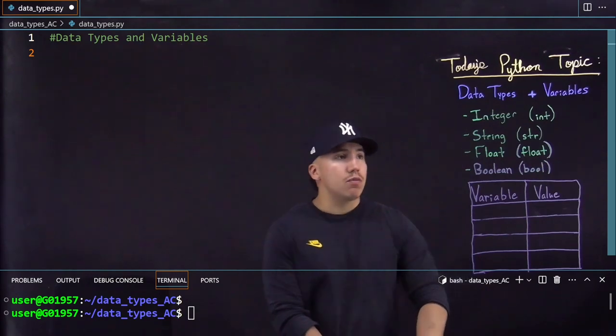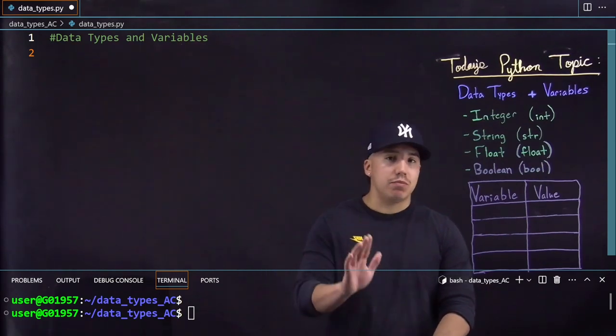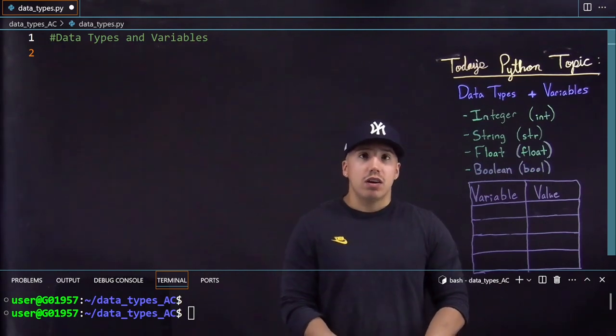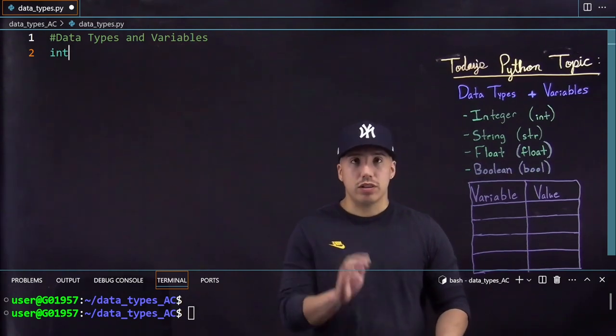So the things that we're going to be going over are integers. I'm going to type these out in the syntax that Python recognizes them as. For example, Python doesn't understand what an integer is, but it understands what an int is. As you can see the color changes.